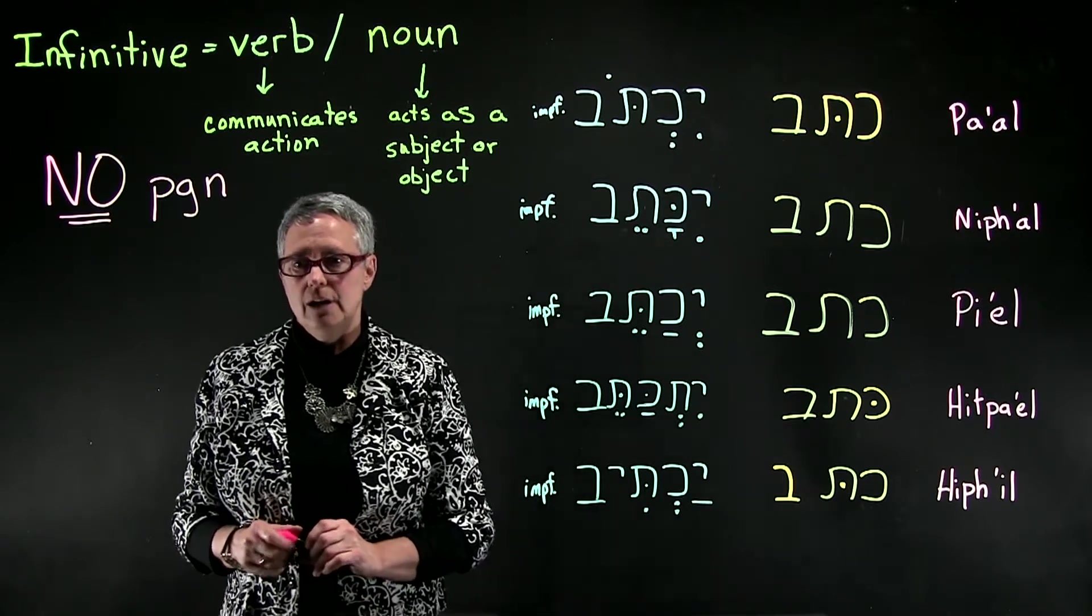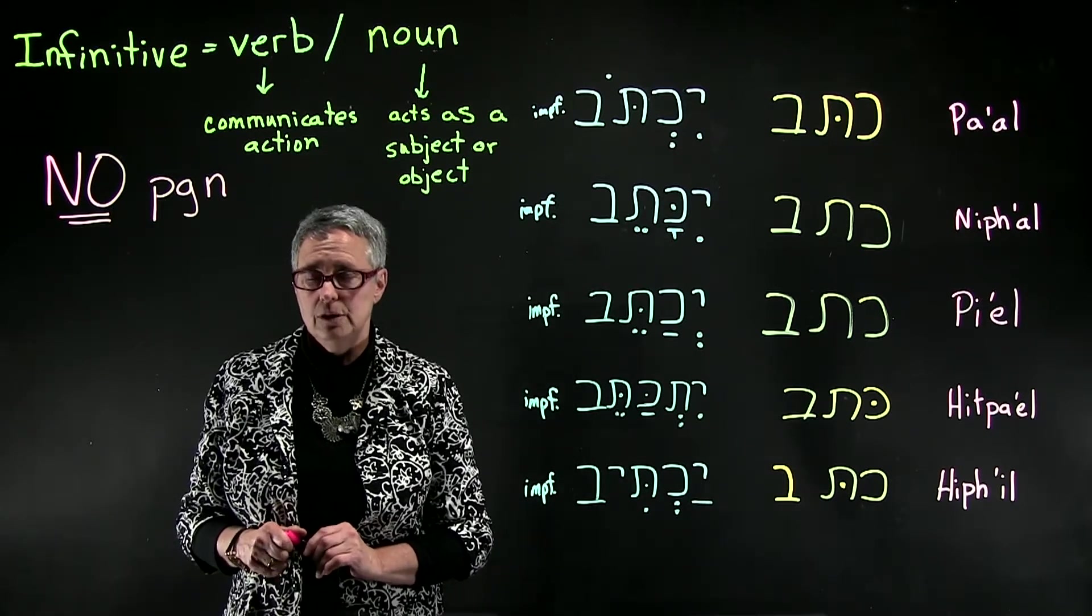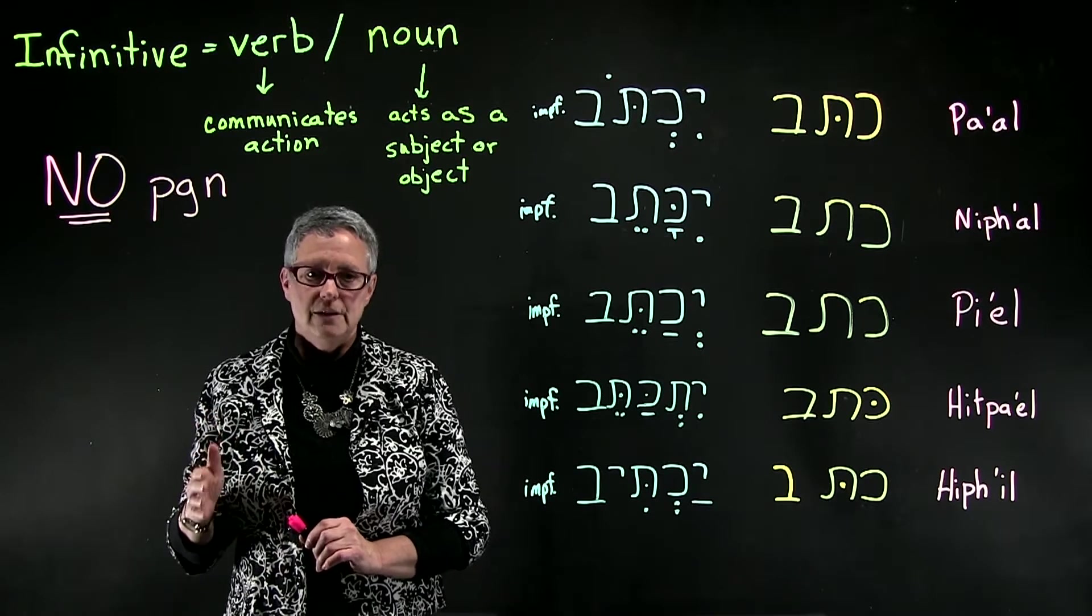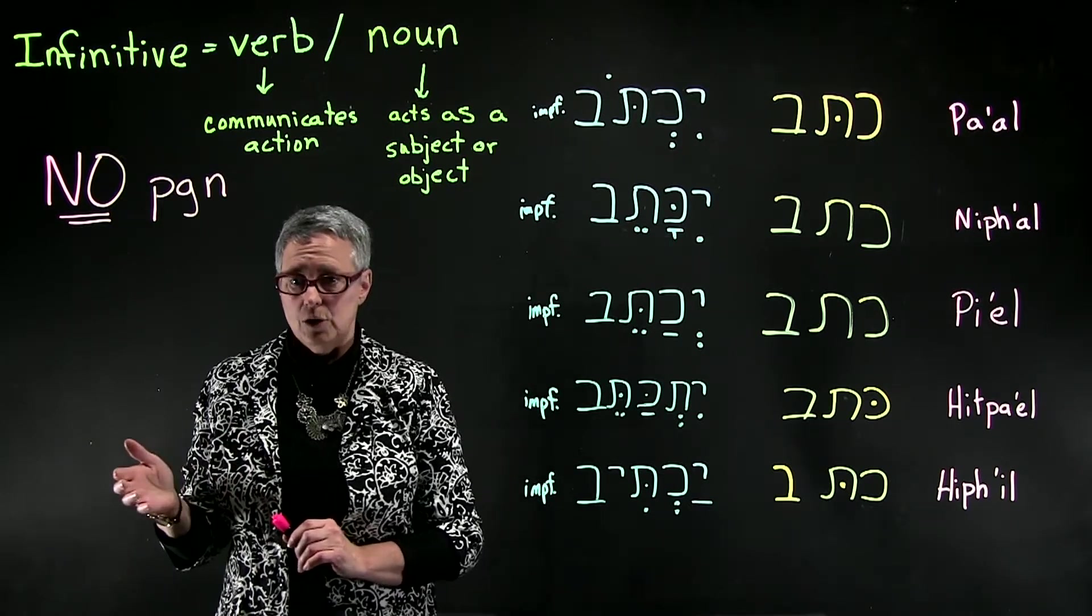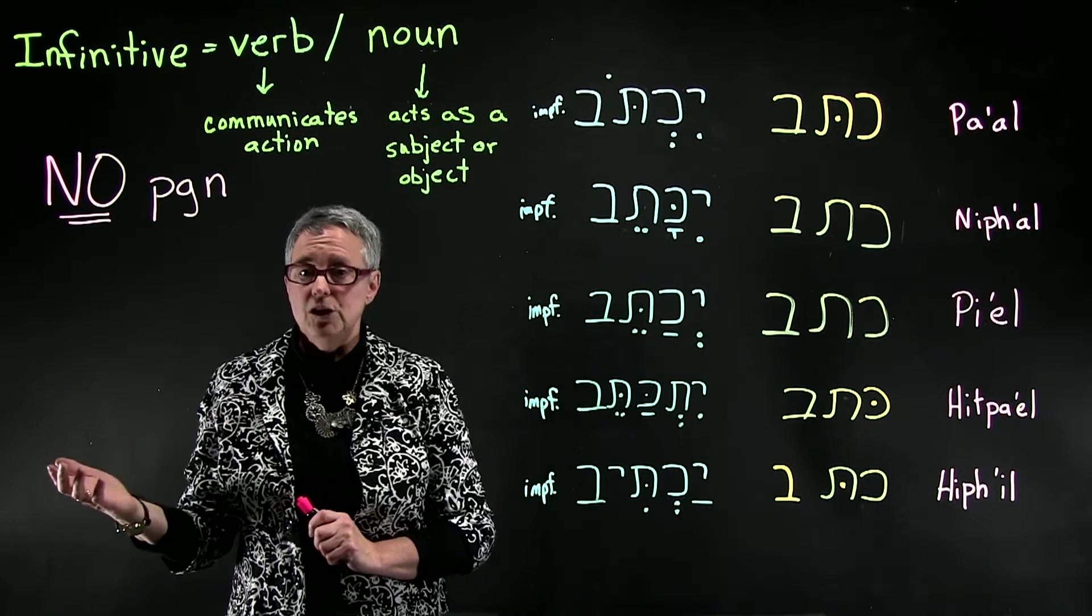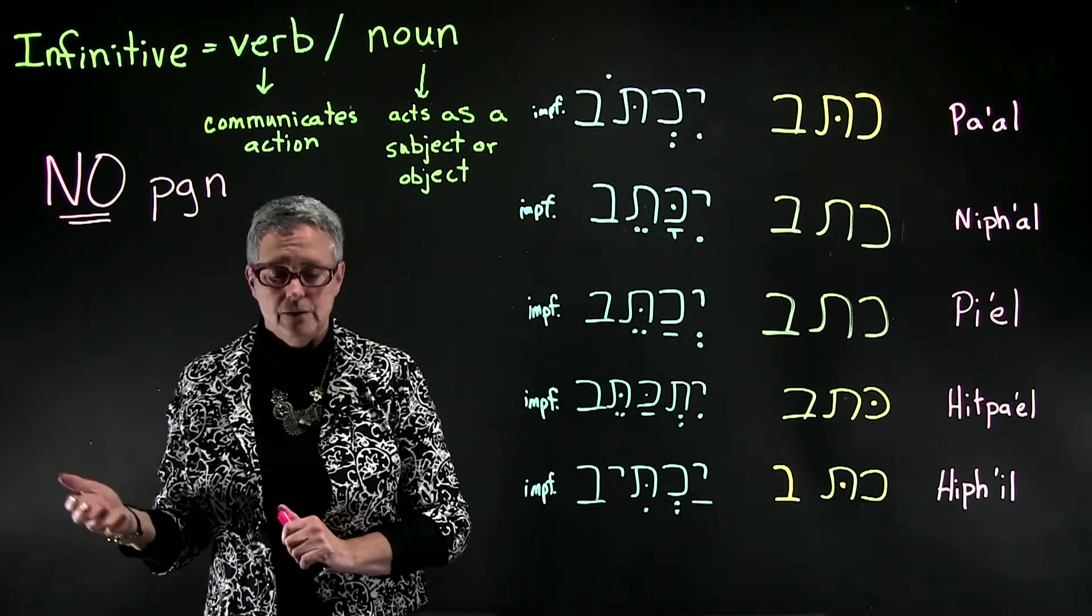One is an infinitive construct, the other is an infinitive absolute. We are going to be focusing in this video on the infinitive construct, but there is information on the infinitive absolute in the chapter.